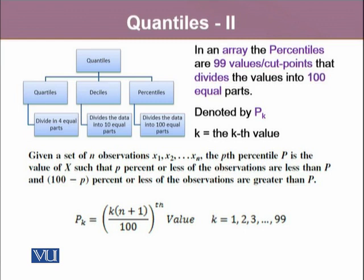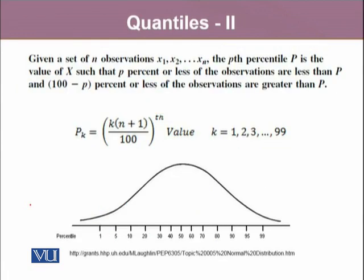Since in percentiles we are dividing our data into 100 equal parts, we'll use this 100 in the denominator and the k values go from 1 to 99. So if we look at this symmetric curve, we will notice that there are all these segments.